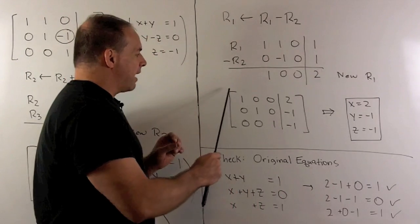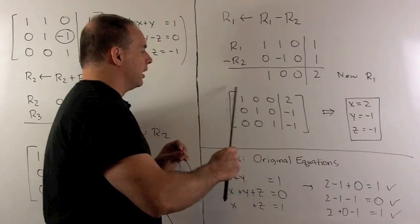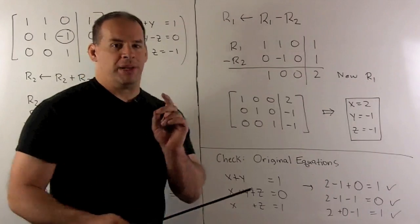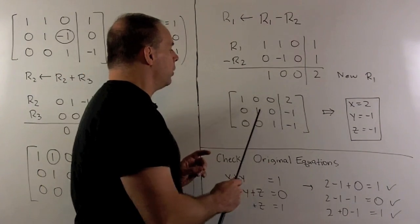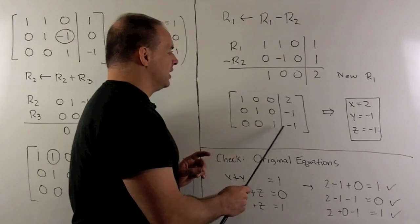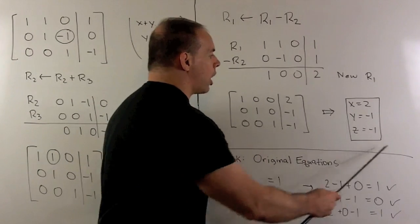So I have the identity matrix in this first part, which means I can just read off our answer. So I'm going to have x equals 2, y equals minus 1, z equals minus 1 for our solution.